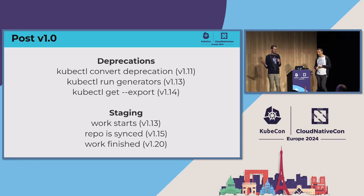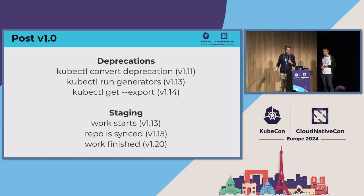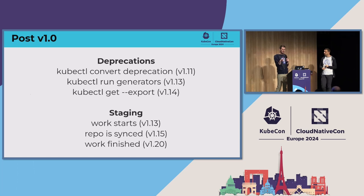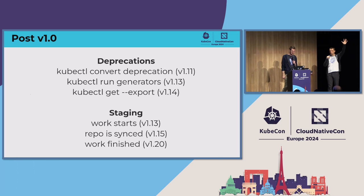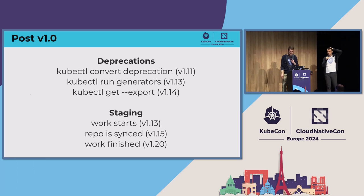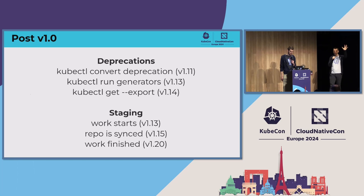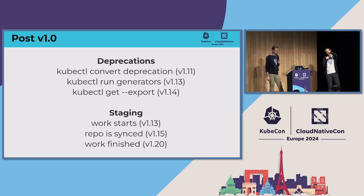Some things we had to deprecate: convert — we pulled that out into its own plugin, for converting between resource versions, and it gets released separately now. We got rid of the run generators. These were artisanal, handcrafted little commands to generate specific resources. Who remembers kubectl run when, if you looked at its help page, it had two pages of man and all the flags it actually had?